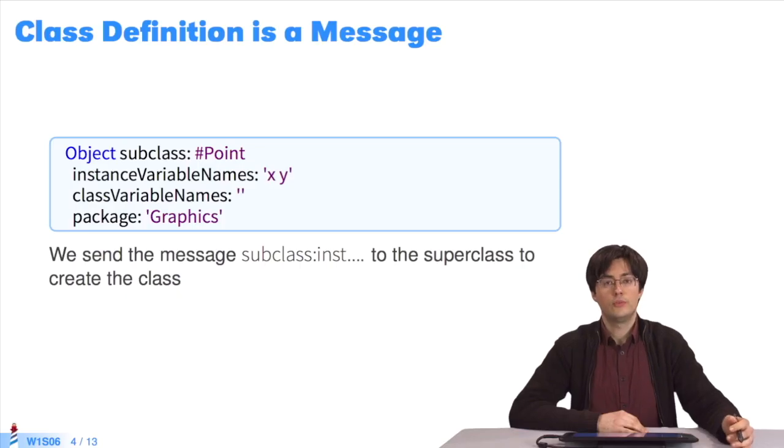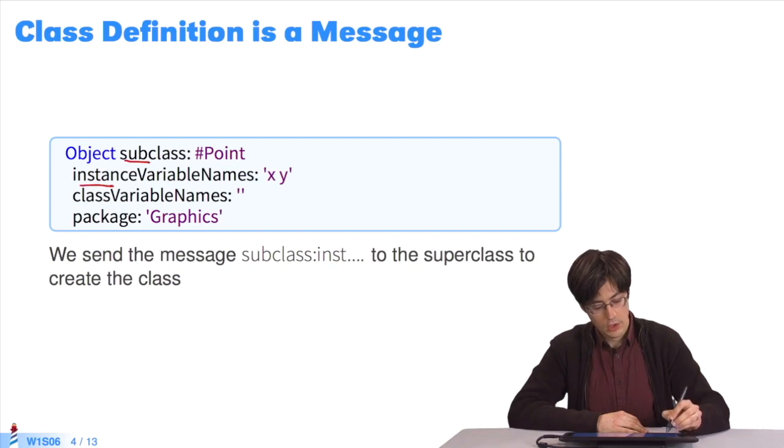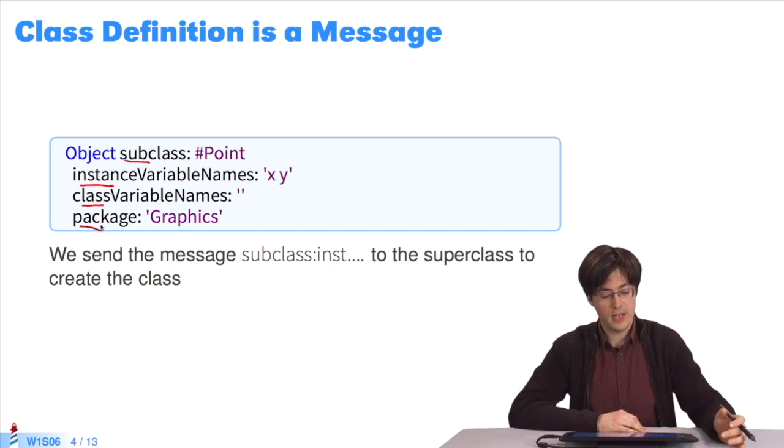In the slides we have code like this for creating a new subclass. To create a class in Pharo we send a dedicated message to the superclass with the name of the subclass as parameter. The message subclass instanceVariableNames classVariableNames package is sent to the class Object with the name of the subclass as parameter, the list of the instance variable names as parameter, and the name of the package as parameter.